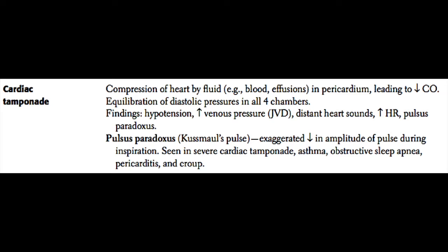Pulsus paradoxus, also known as Kussmaul's pulse, is basically an exaggerated decrease in the amplitude of the distal pulse during inspiration. All of us have a decrease in blood pressure when we take a breath in, but in patients with severe cardiac tamponade, asthma, obstructive sleep apnea, pericarditis, and even croup, there may be an exaggeration of that natural response, due to increased right-sided pressures leading to decreased cardiac output.